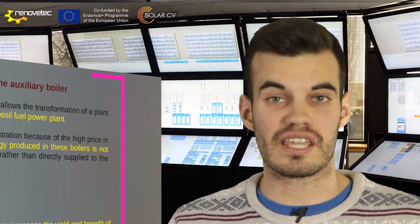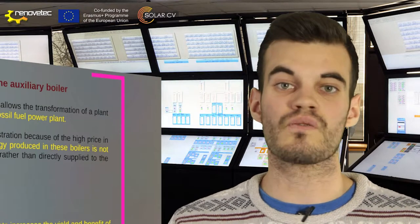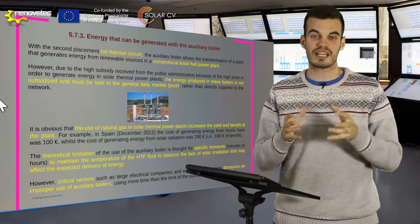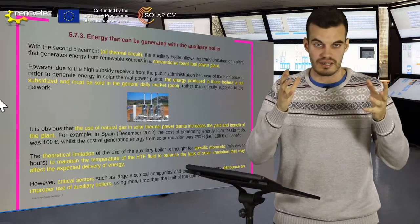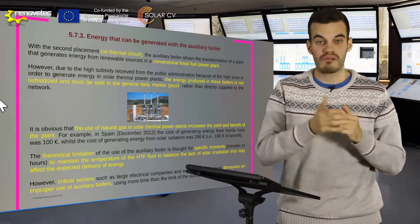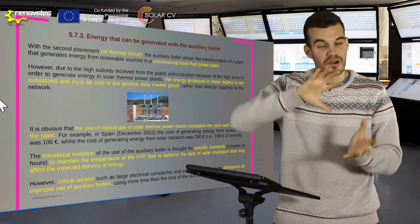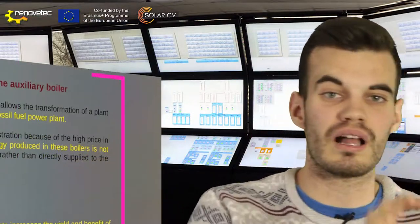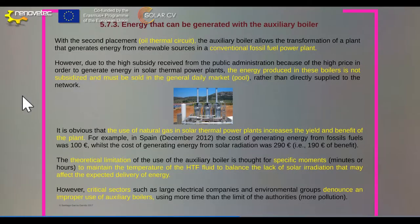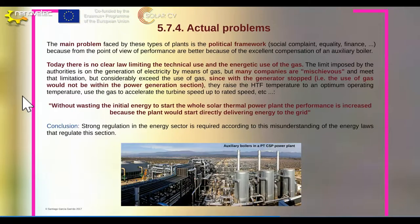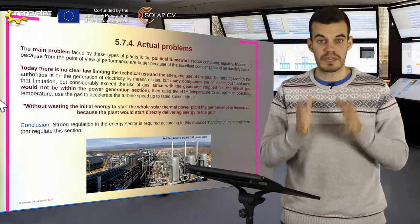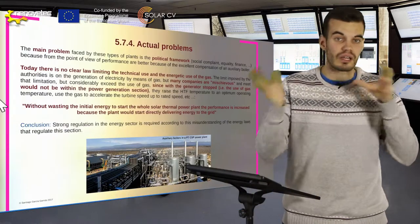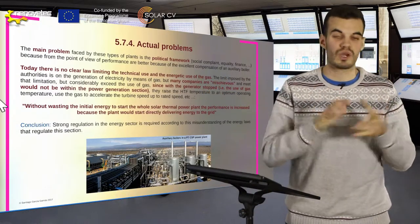It is obvious that the use of this gas is going to increase the yield and performance of our overall plant. However, we have a limit: we cannot use this auxiliary boiler simply to produce energy. We can use it to increase the temperature of the HTF and increase the renewable part of our PTCSP plant, but we cannot use it as an individual piece of equipment. For this reason, the main problem faced by this type of plant — a PTCSP plant with an auxiliary boiler — is the political framework, because today there is no clear legal limitation on the technical use of this auxiliary boiler.